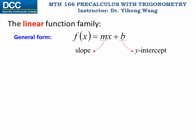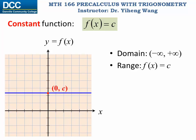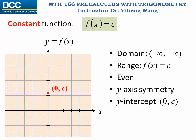There are two special functions in the linear function family. The first is the constant function f(x) equals a constant real number c. The independent variable can be any real number, so the domain is from negative infinity to positive infinity, or all real numbers. The range, however, only includes one number, the real number c. It is an even function, symmetric about the y-axis. This function in general has only one y-intercept, (0, c), unless it is f(x) equals 0, in which case it has the same x and y-intercept at the origin. This function is always constant.